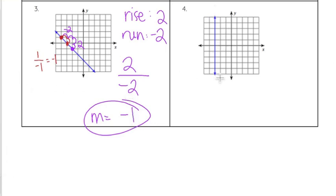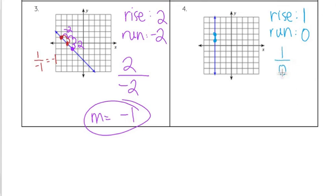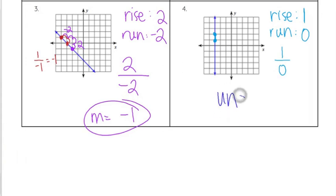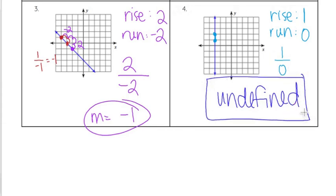On number four, this is one you can memorize, or you can set up your rise over your run. If you pick any two points — say I go from the bottom one up, your rise is one. Your run is zero; we don't go left or right at all. One divided by zero — remember, you cannot divide by zero — so our slope is undefined. That tells us anytime we have a vertical line, it will be undefined as our slope.